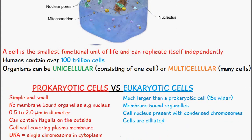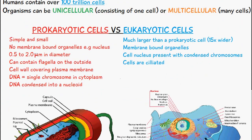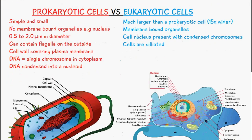There are different types of cells which make up organisms — they can either be prokaryotic or eukaryotic. A prokaryotic cell is very simple and small, approximately 0.5 to 2 micrometers in diameter. A key thing to note about prokaryotic cells is that they don't contain membrane-bound organelles.